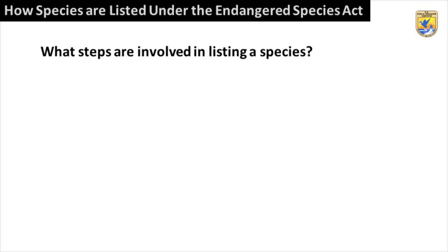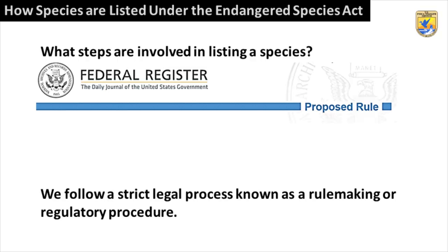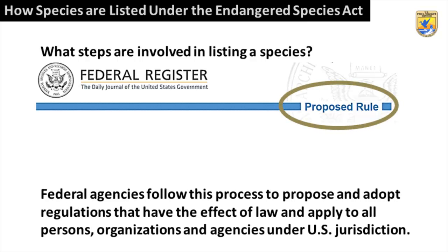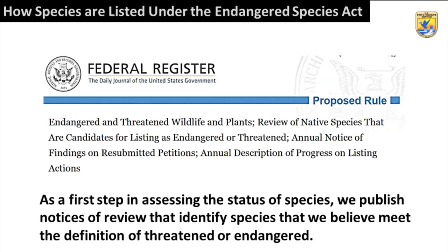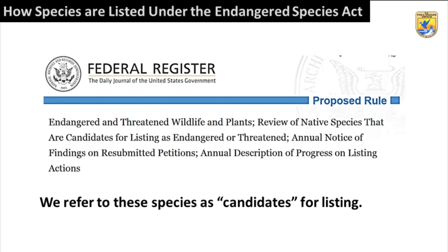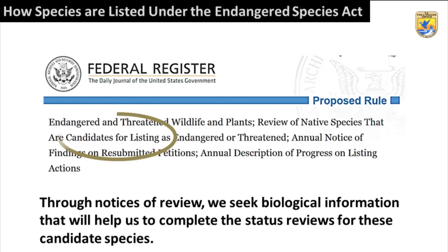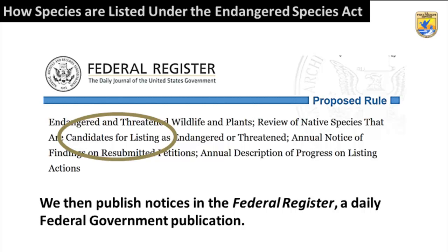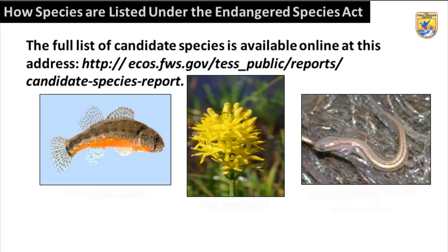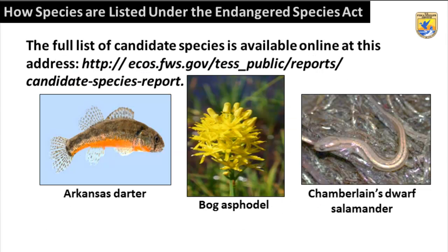What steps are involved in listing a species? We follow a strict legal process known as rulemaking or regulatory procedure. Federal agencies follow this process to propose and adopt regulations that have the effect of law and apply to all persons, organizations, and agencies under U.S. jurisdiction. As a first step in assessing the status of species, we publish notices of review that identify species we believe meet the definition of threatened or endangered — we refer to these as candidates for listing. Through notices of review, we seek biological information to complete status reviews for these candidate species, and we publish notices in the Federal Register, a daily federal government publication. The full list of candidate species is available online.